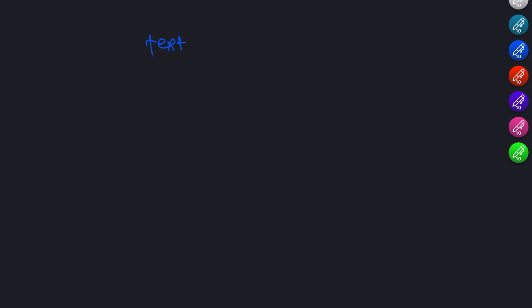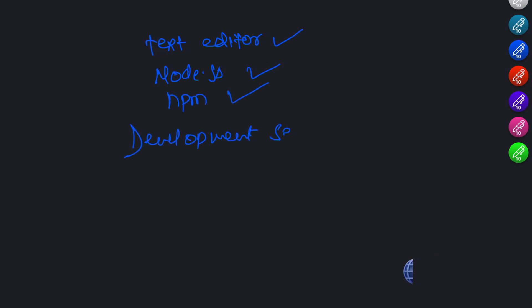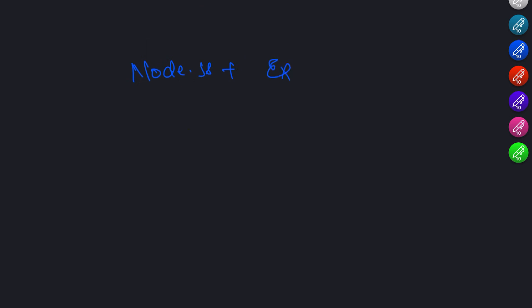Now that we have a text editor, Node.js, and npm installed, we can move on to setting up a development server. A development server is a local server that you can use to run your JavaScript applications and test them in a browser. In this tutorial, we will be using Node.js and the Express.js framework to set up our development server. Express.js is a popular Node.js framework that provides a simple way to create web applications and APIs.